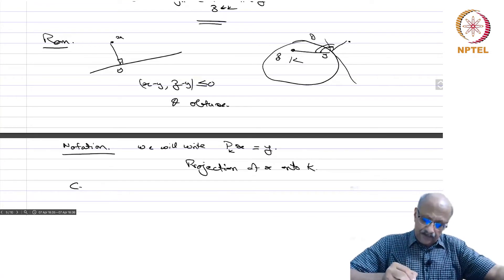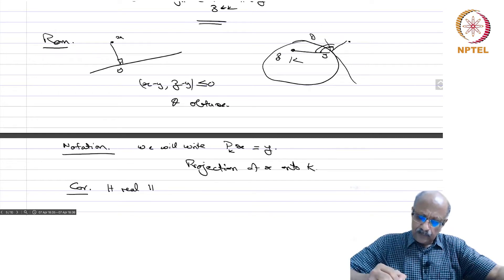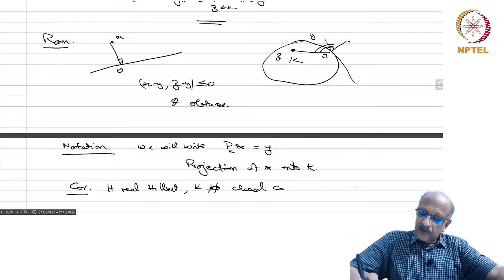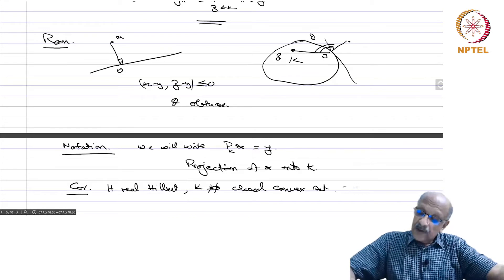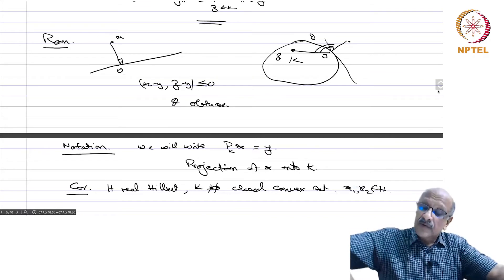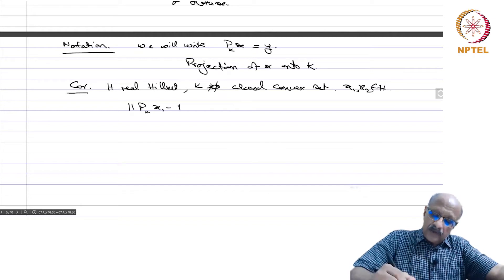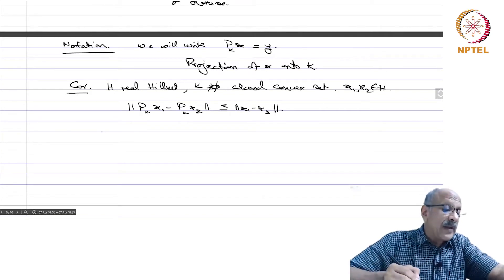Corollary: let H be a real Hilbert space and K a non-empty closed convex set. Then if x_1, x_2 are in H — remembering that the projection is a nonlinear mapping — we have norm of P_K(x_1) minus P_K(x_2) is less than or equal to norm of x_1 minus x_2. So the projection is a non-expansive mapping.